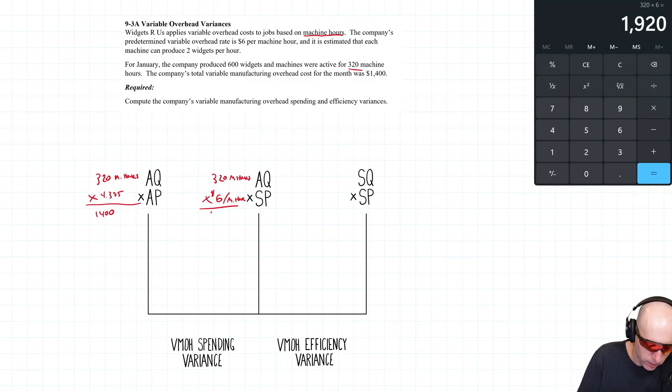The difference here is 520. Now you can see this is a good news difference, right? We expected to be spending six dollars a machine hour on variable overhead; we only spent four dollars. So yeah, we saved some money. This is a favorable variance.